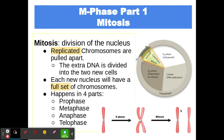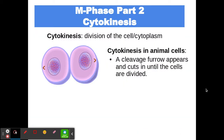Once we've divided the nucleus and have two nuclei ready for the new daughter cells, we perform cytokinesis — dividing the cell and cytoplasm. In animal cells, cytokinesis is a pinching in at the center until the two cells separate. This is called a cleavage furrow.